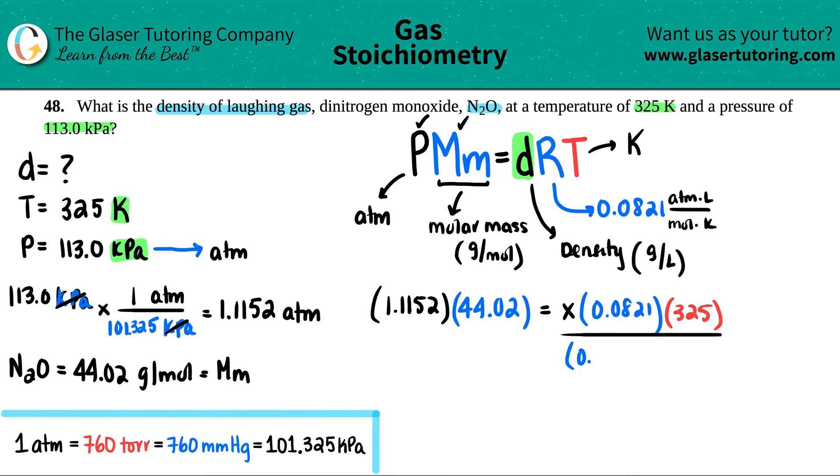And the reason why I like to do this is I like to plug it all in in one shot so that I'm not going to have any unnecessary rounding in the middle of the equation. So I'm just going to divide each one by the R value. And then I'm going to divide by 325.